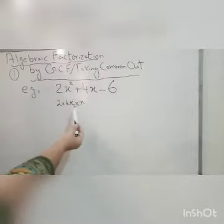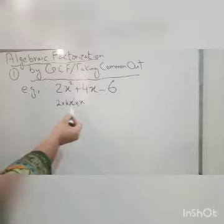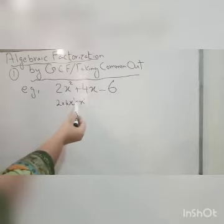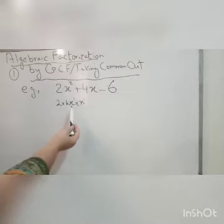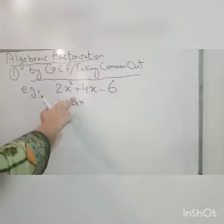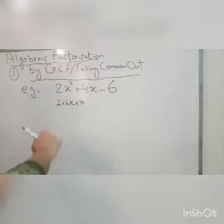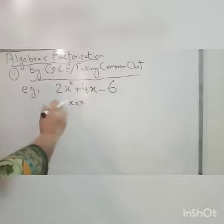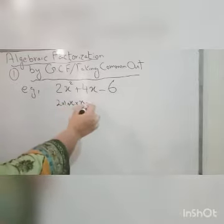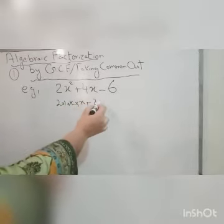We can split it as well into its powers. When the bases are same, its power could be added, so x² could be written as x into x. When there is no power or index given, there is 1 always. So we transform this into this. Plus 4 could be written as 2 into 2 into x, and 6 could be written as 2 into 3.